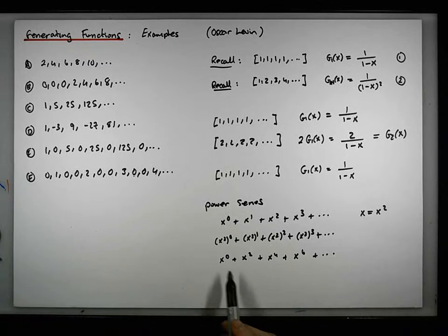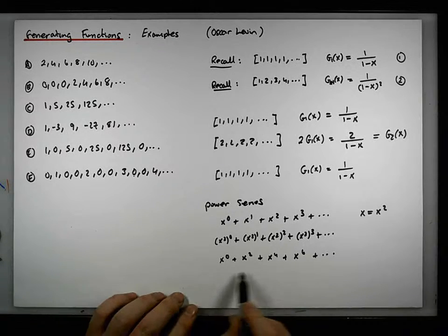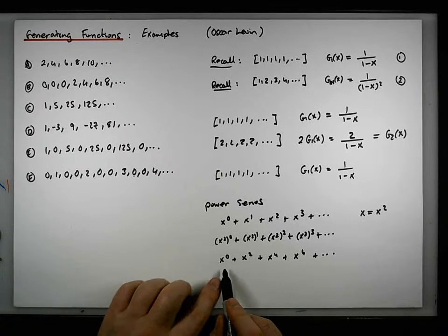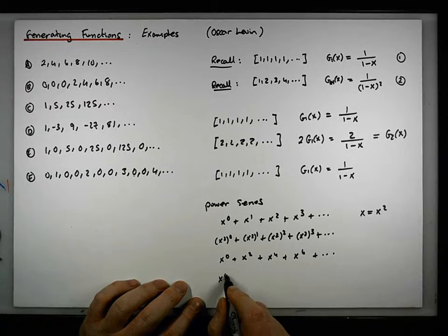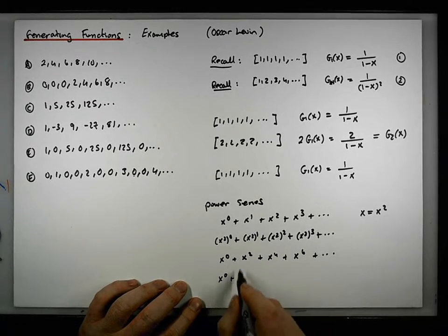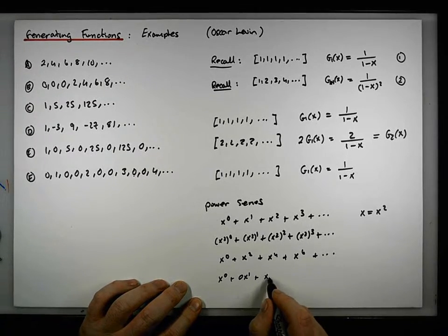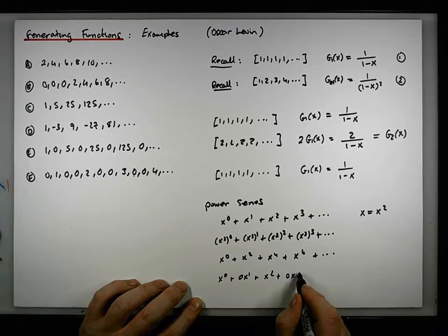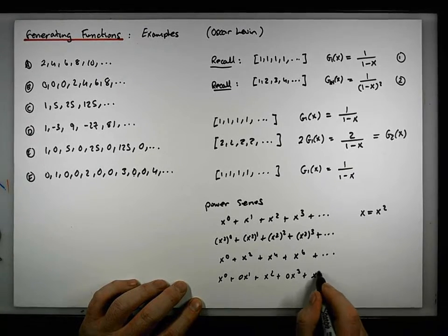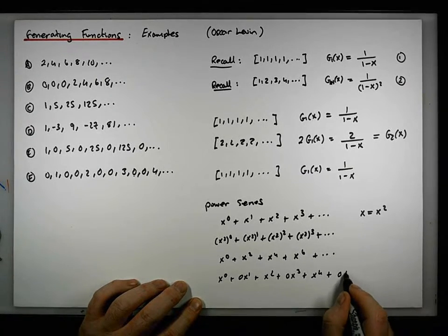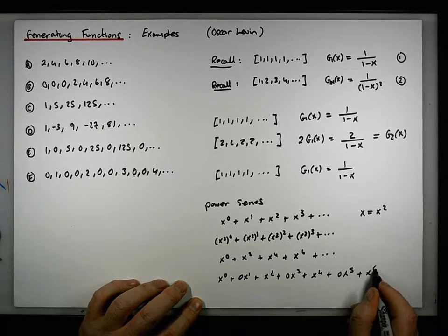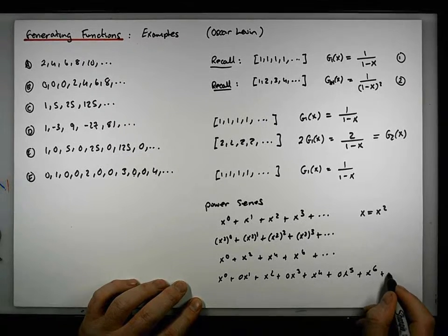Effectively, if I expand this out with the missing terms, this becomes x to the zero plus zero·x to the one plus x to the two plus zero·x to the three plus x to the four plus zero·x to the five plus x to the six plus dot dot dot.